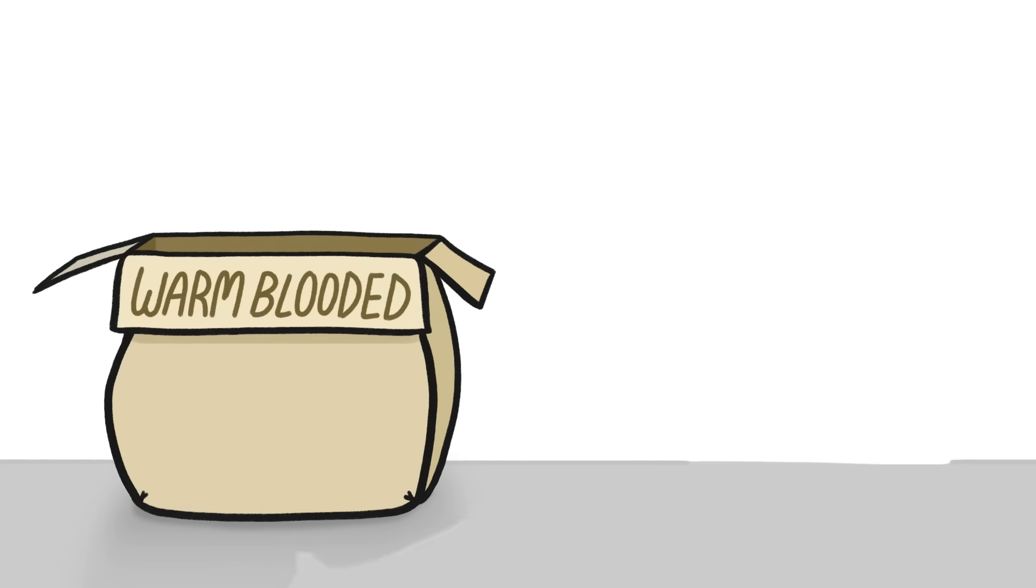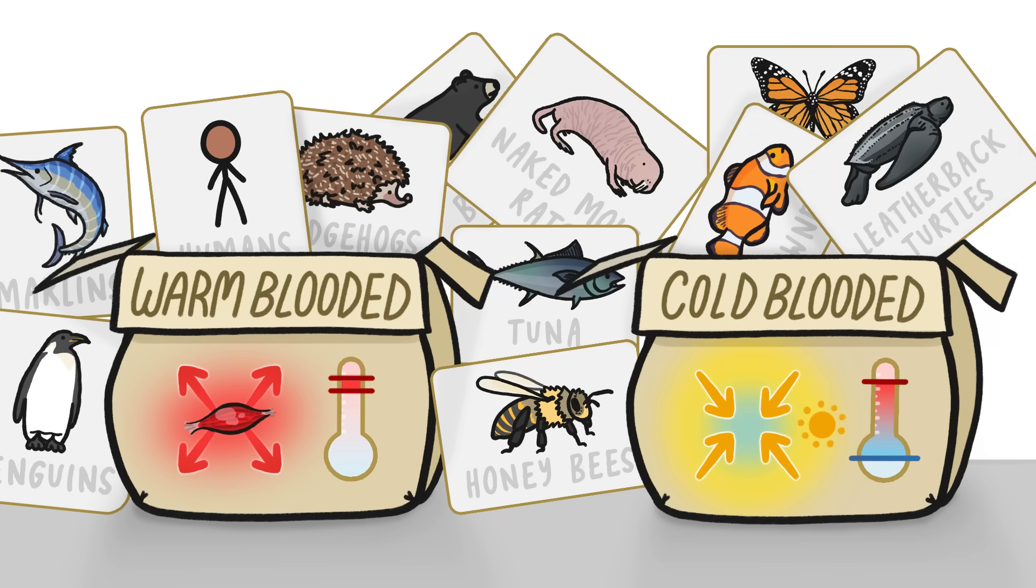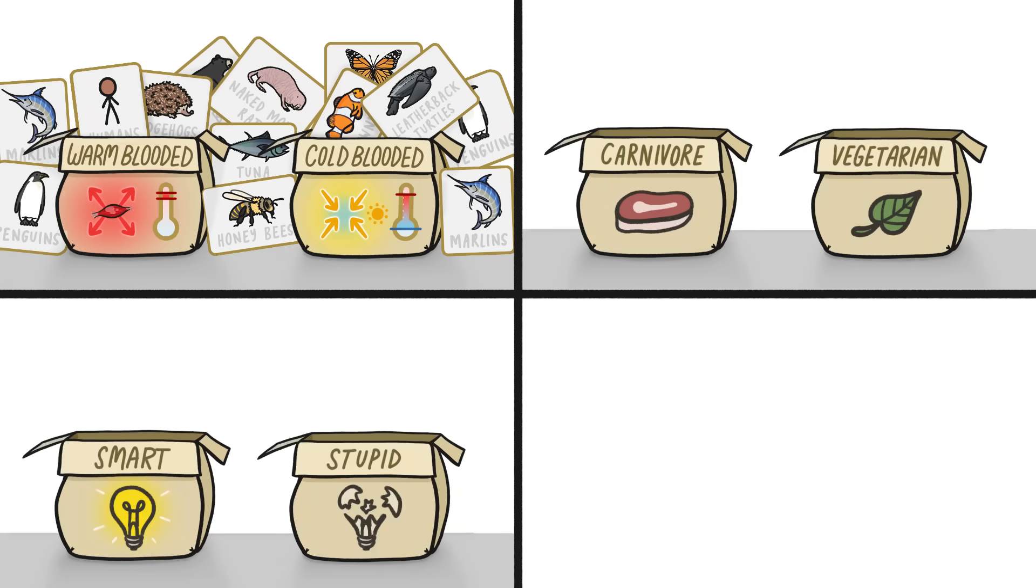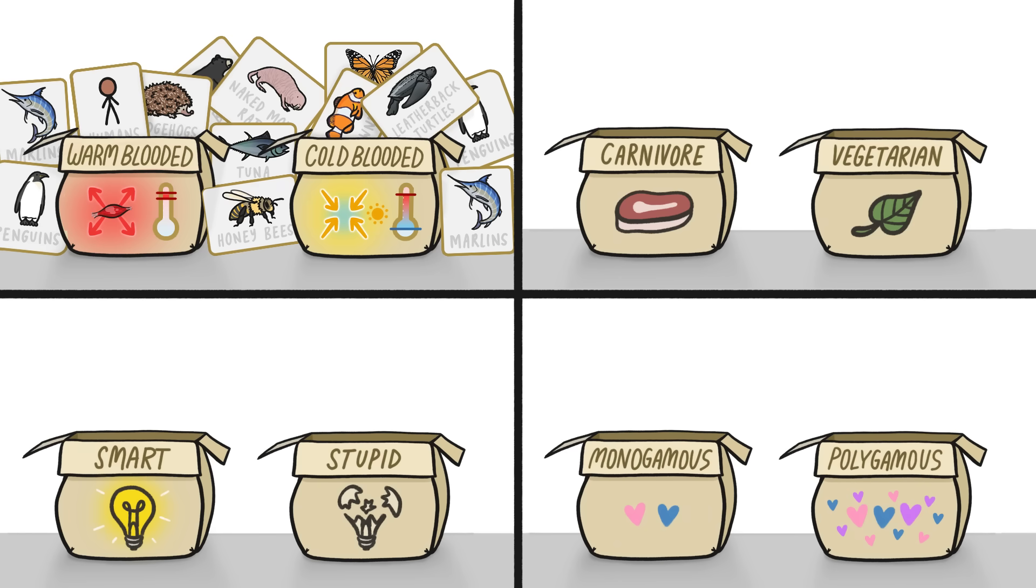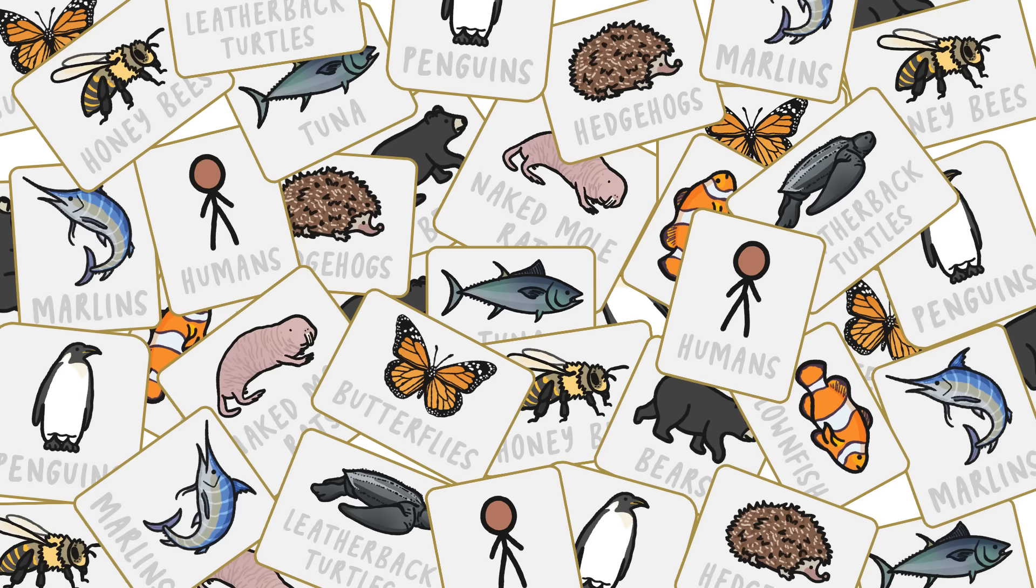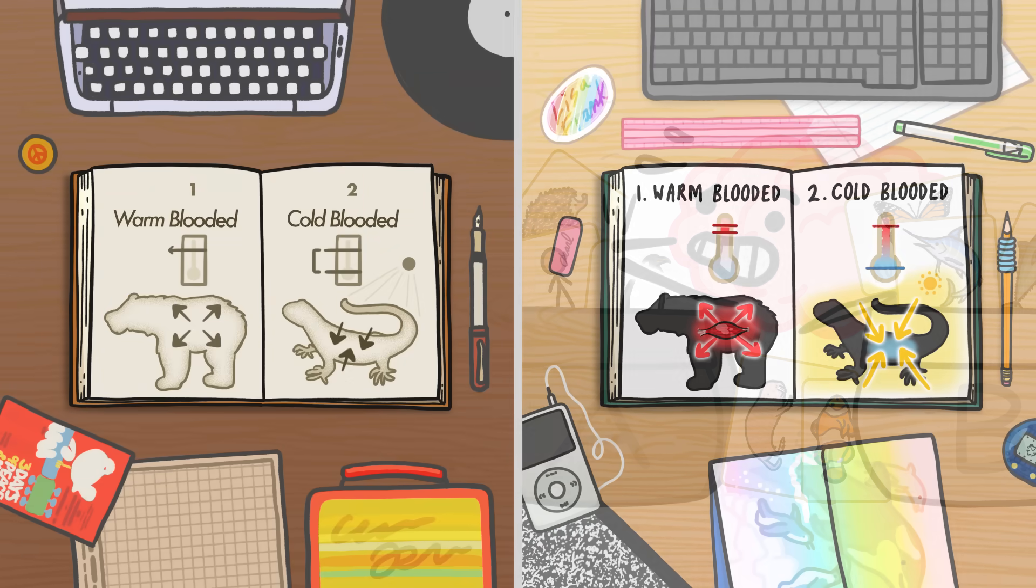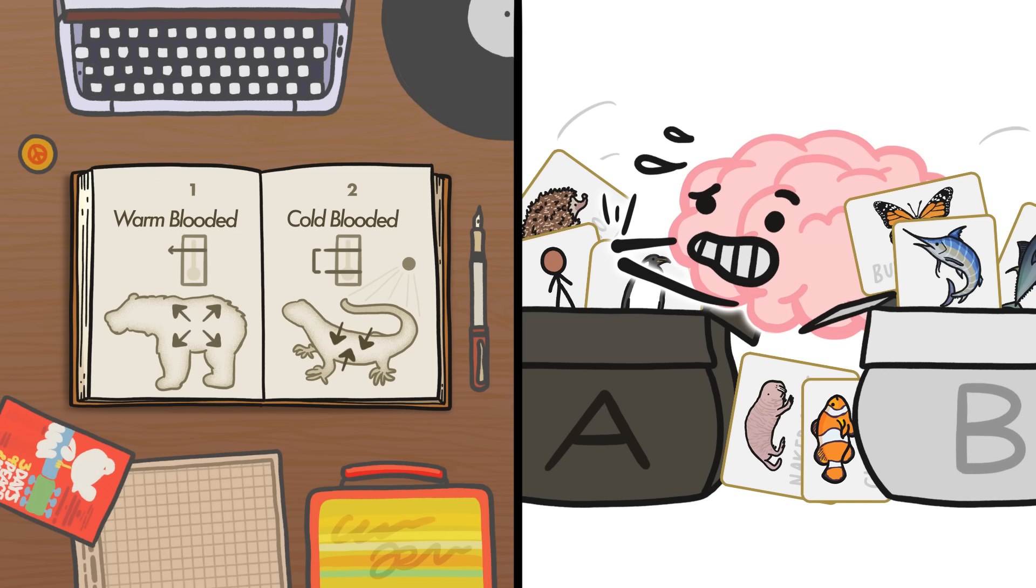So why do we continue to try to lump all these diverse strategies into just two buckets? Well, the same reason we tend to divide lots of animal traits, like their diet, their intelligence, and their mating system, into discrete categories, despite the fact that they don't actually fit into those boxes. We divide them because of historical inertia and because human brains like to label things in black and white terms, even when the truth is often more complicated.